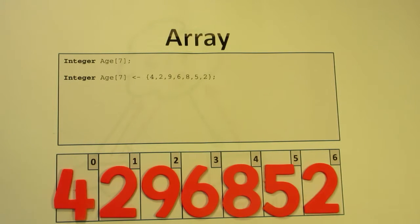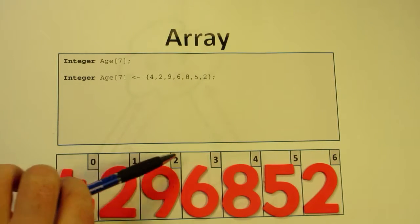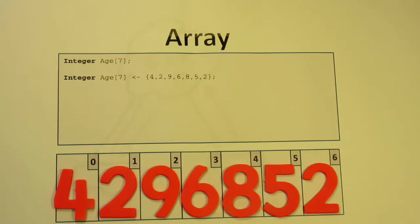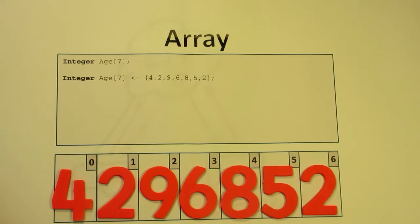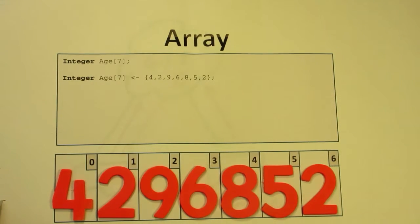...zero, one, two, three, four, five, and six. So if the array is of length seven, the index or the numbers go from zero to six. If the length of the array is n, it goes from zero to n minus one.